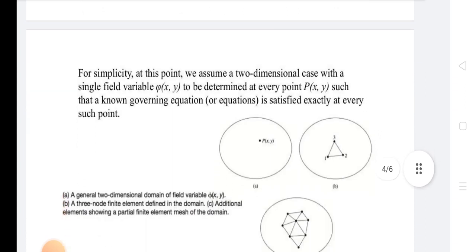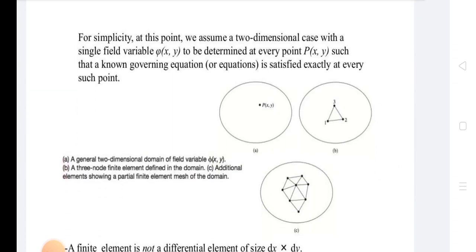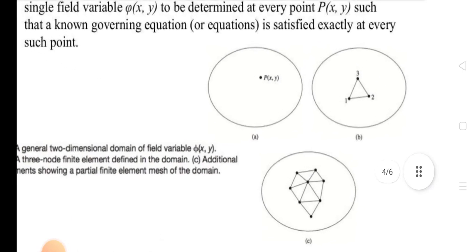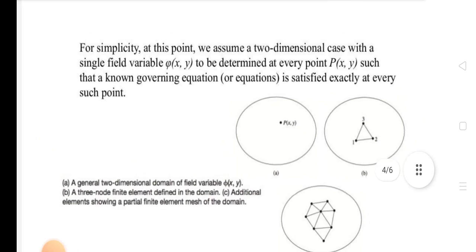For simplicity, we assume a two-dimensional case with a single field variable phi(x,y) to be determined at every point P(x,y) such that the unknown governing equation is satisfied exactly at every such point. This is the diagram P(x,y), a general two-dimensional domain of field variable phi(x).